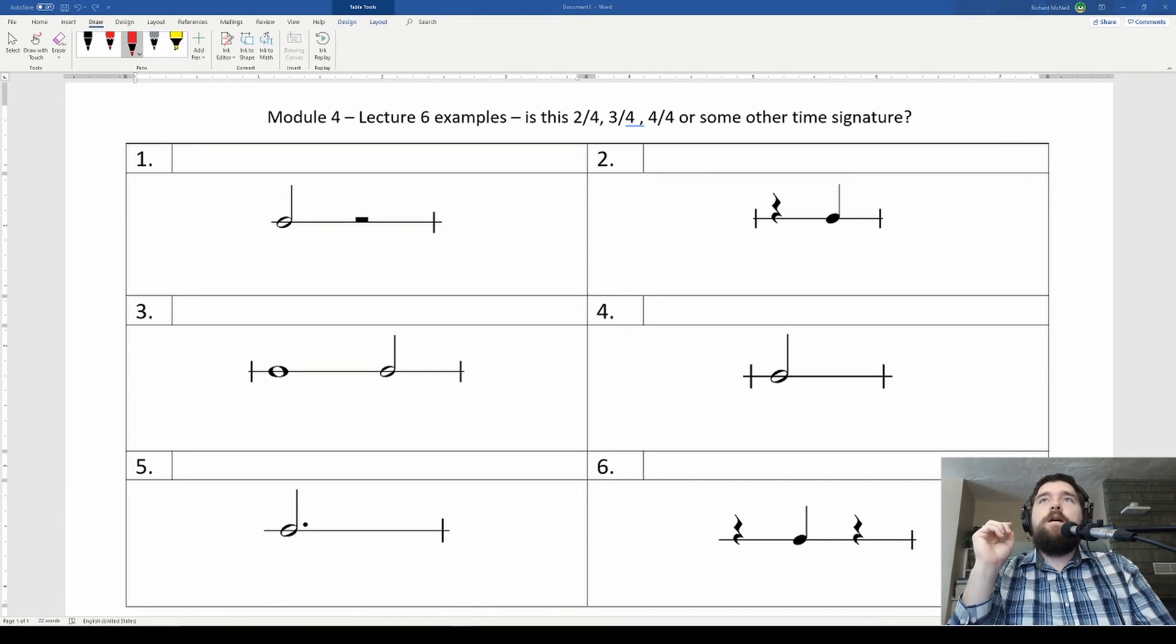All right, so this lecture is all about 2/4, 3/4, 4/4 time. What sorts of measures do these look like, and what types of notes and rests would fit inside of these time signatures? We are also looking at could something possibly be another time signature that we have not learned yet?